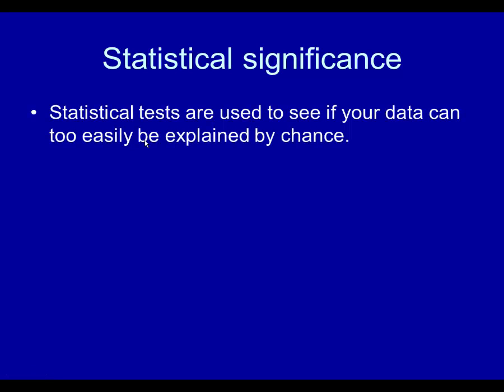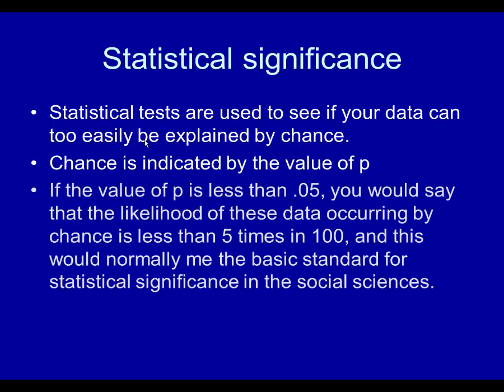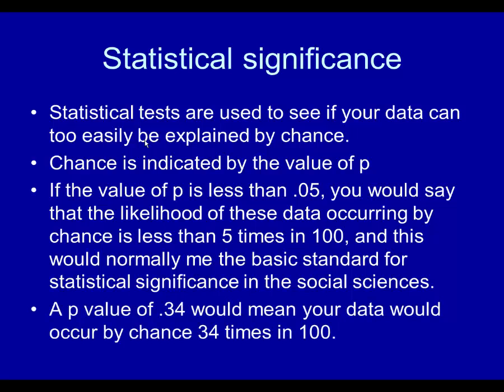Statistical tests are used to see if your data can too easily be explained by chance. If it can, then it should not be considered a meaningful basis for drawing a conclusion about the relationship. Chance is indicated by the value of p. If the value of p is less than 0.05, you would say that the likelihood of these data occurring by chance is less than five times in 100, and this would normally be the basic standard for statistical significance in the social sciences. That standard is arbitrary — if you want to use a different one, there's no scientific basis for arguing with you, but if you want to get your data published, you should basically accept normal standards like that. A p-value of 0.34 would mean your data would occur by chance 34 times in 100; 0.63 means 63 times in 100.